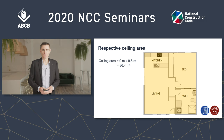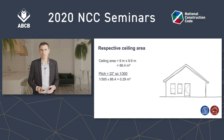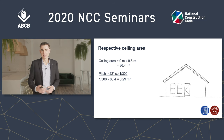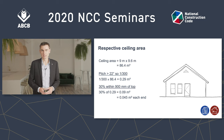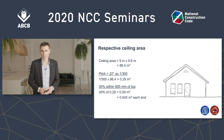Here's a worked example. The area of this ceiling is 86.4 square metres. The total ventilating area required is calculated by multiplying this area by a factor. There are two factors: one for low roofs (pitch of 22 degrees or less) and one for taller roofs (pitch more than 22 degrees). Since we have more than 22 degrees, we multiply by 1/300, giving a total ventilating area of 0.29 square metres. Of that total, 30 percent must be within 900 millimetres of the top of the roof — that's 0.09 square metres.